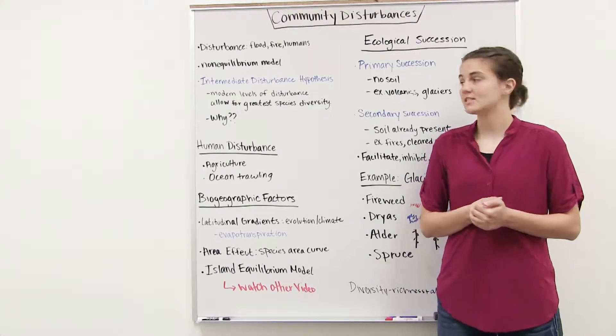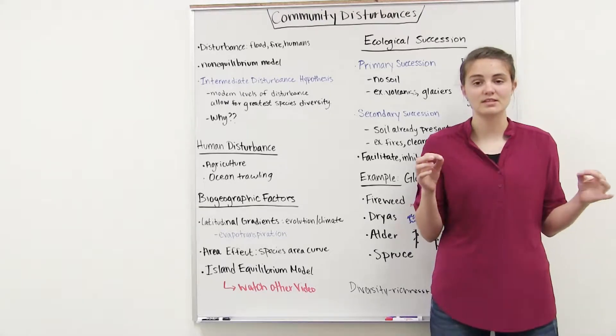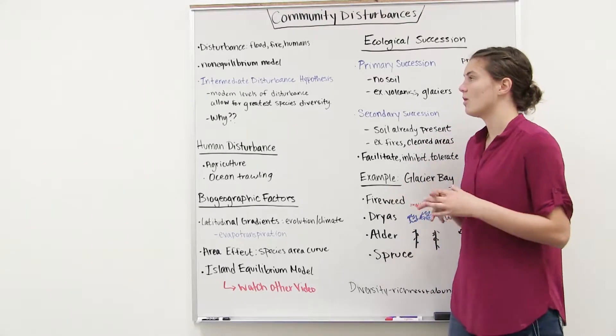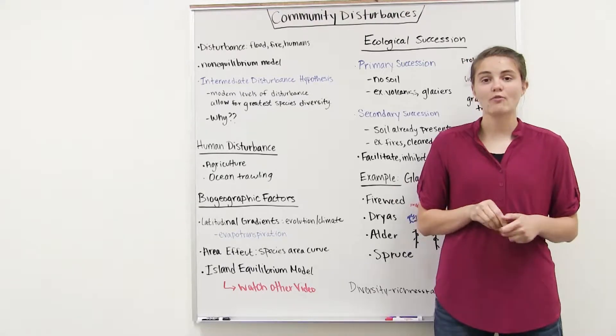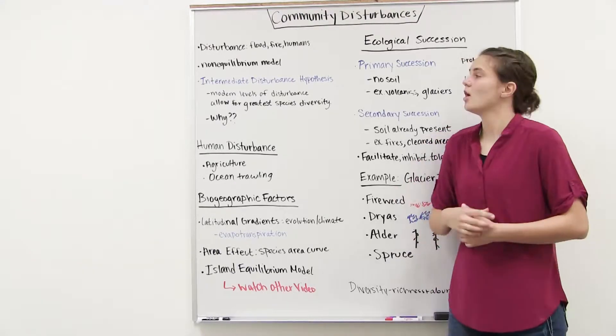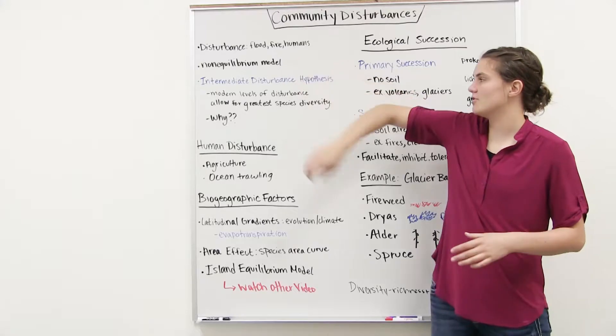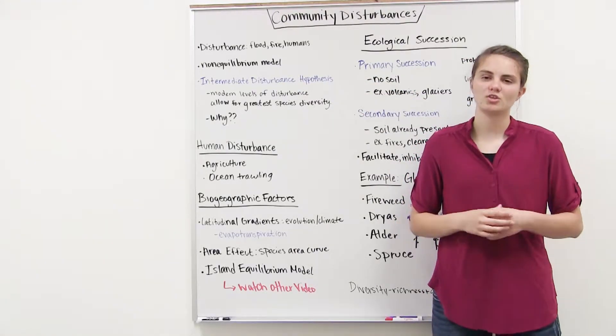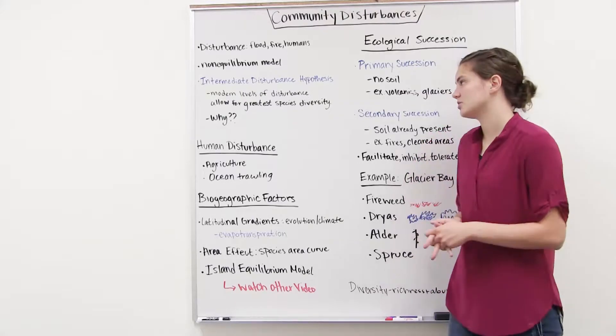So previously ecologists kind of believed that communities were in equilibrium, they were pretty constant, and they didn't have to undergo a lot of these changes. However, as we continue to observe communities, we've started to follow this non-equilibrium model more—that communities are constantly undergoing changes because they're constantly being faced with disturbances.